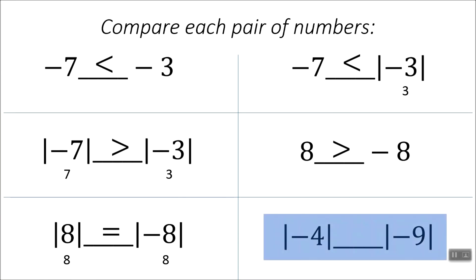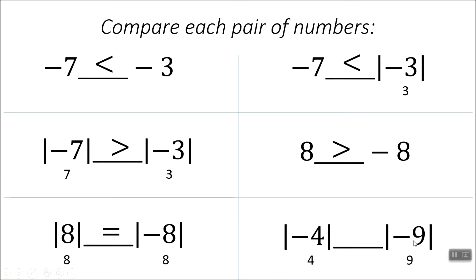Finally, we have absolute value of negative 4 and absolute value of negative 9. They both will end up turning positive. Negative 4's distance is 4, negative 9's distance is 9. 4 compared to 9 is less, so I'm going to put a less than symbol. That's about it — I hope this helps. Best of luck to you.